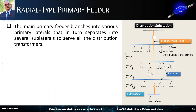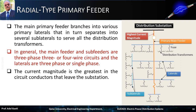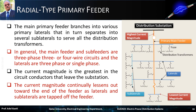As seen in the previous chapter and as shown in this figure, the main primary feeder branches into various primary laterals that in turn separate into several sublaterals to serve all the distribution transformers. In general, the main feeder and sub feeders are three-phase three or four-wire circuits, and the laterals are three-phase or single-phase circuits. It is clear that the current magnitude is the greatest in the circuit conductors that leave the substation and carry the total load, and the current magnitude continually lessens toward the end of the feeder as laterals and sublaterals are tapped off.